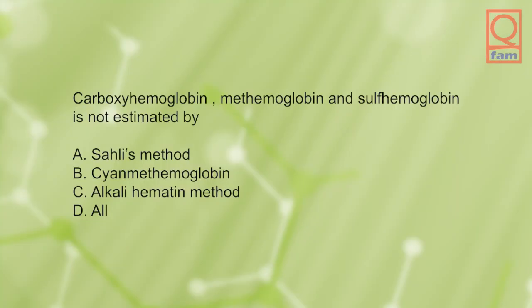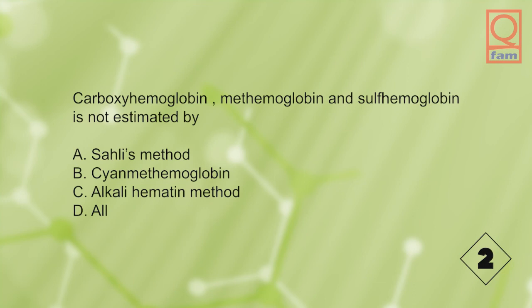Carboxyhemoglobin, methemoglobin and sulfhemoglobin are not estimated by: A) Sahli's method, B) cyan-methemoglobin, C) alkali hematin method, D) all. The answer is A, Sahli's method.